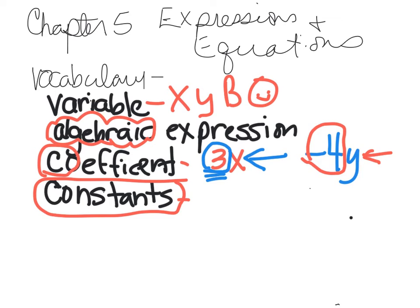So I would say something like 3x plus 4. Let's label these parts. Now, the 3 is the coefficient. The x is the variable. And the 4, the positive 4, is the constant. Because constants are numbers. Coefficients are numbers, but they're stuck on to variables.